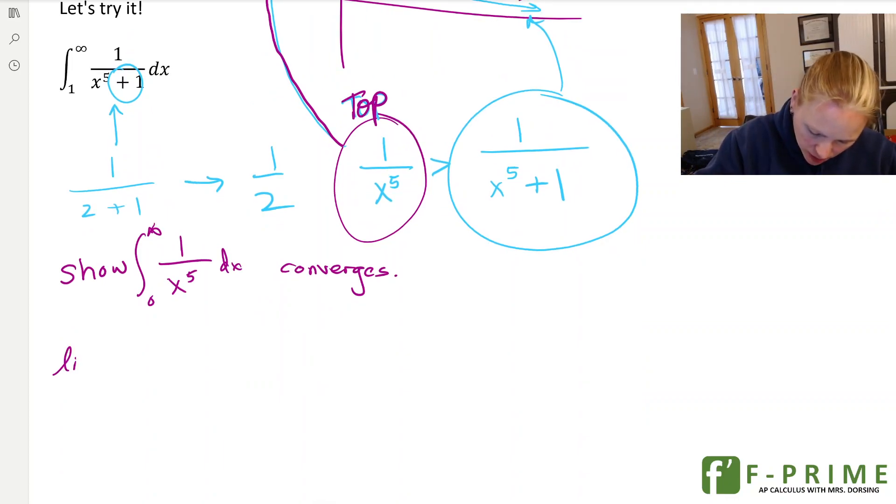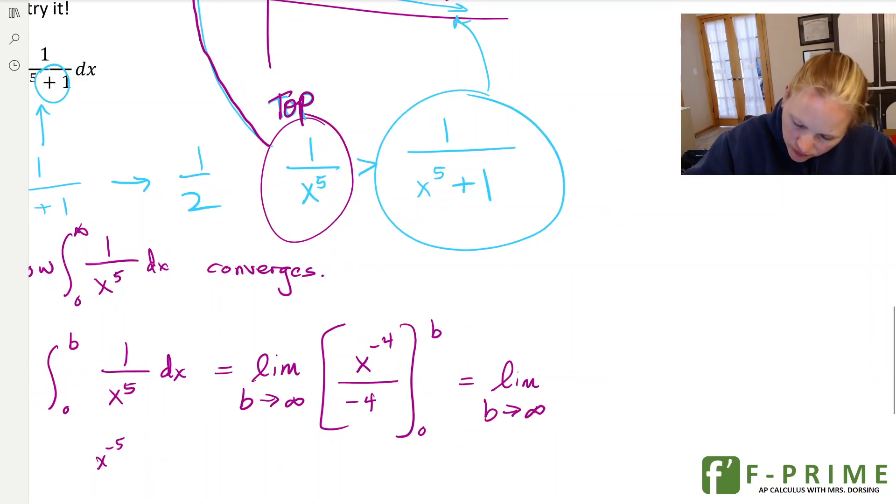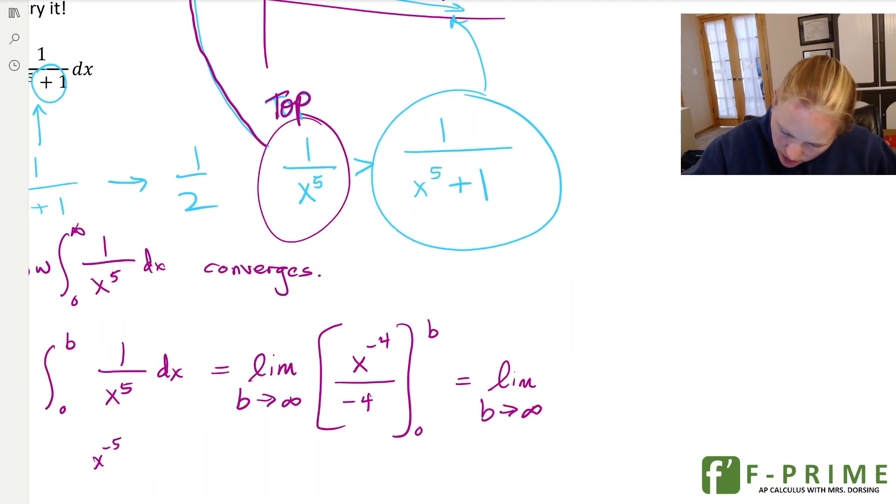So let's try to see if this converges. So I'm going to do the limit. I'm going to do my improper integral, b approaches infinity from 0 to b. I'm going to do my antiderivative. So this is x to the negative 5, so it becomes x to the negative 4 over negative 4 from 0 to b.